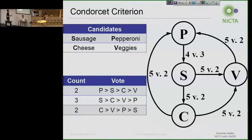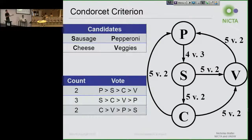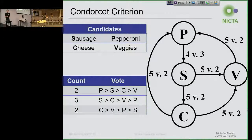We can take these votes and look at all the pairwise matchups. But the problem — this is called the Condorcet cycle or Condorcet paradox — is that you can get situations where a majority of people prefer one item to another, a majority prefer sausage to veggie, and a majority prefer veggies to pepperoni. So you have this cycle where everything is majority preferred to everything else. This gives you weird situations where individually rational preferences are not group rational.